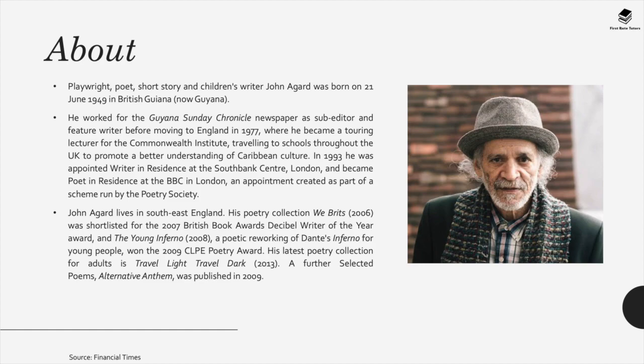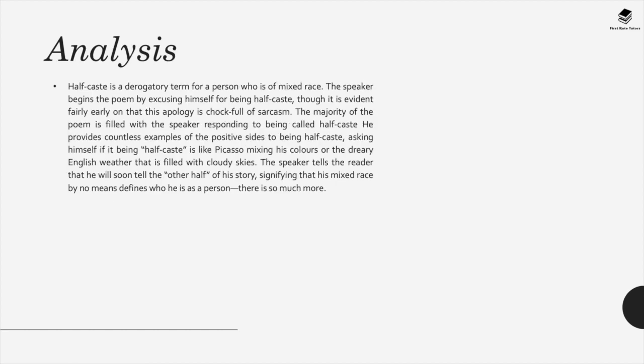The next poem is Half-Caste by John Agard. Agard was born on 21 June 1949 in Guyana and is a contemporary poet who lives in southeast England as a first-generation immigrant. Much of his poetry reflects his views as an immigrant within England. The word 'half-caste' in the title is a derogatory term for a person of mixed-race descent — a term we no longer use because it is racist. Agard himself is of mixed-race descent and uses this title to prove a social point.